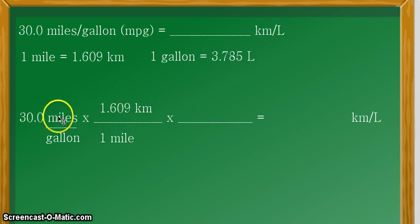So, since the miles unit here is in the numerator, for it to cancel out, the mile unit in our conversion factor should be in the denominator, so that this will cancel out.